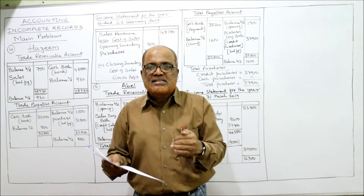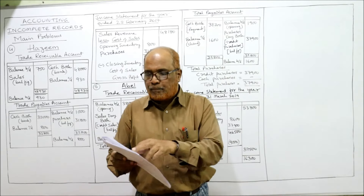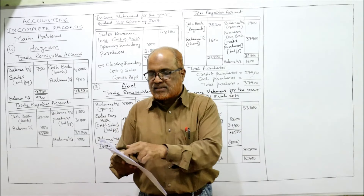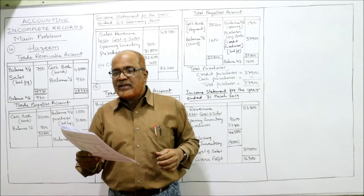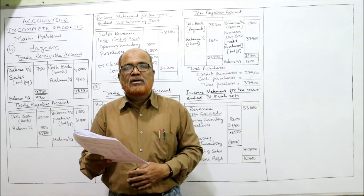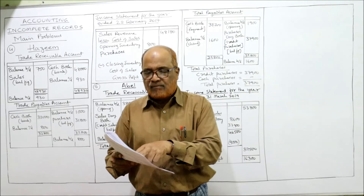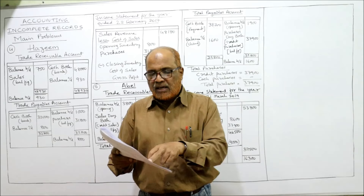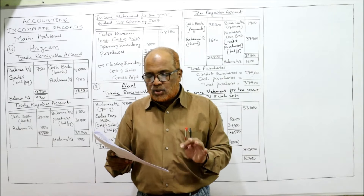Three key figures from the bank statement: cash received from receivables 48,000; cash paid to payables 32,000; cash paid for general expenses 7,000. Opening balances at 1st March 2016 and closing balances at 28th February 2017 are given — trade receivables opening 750, closing 930; trade payables opening 1,000, closing 800; inventory opening 800, closing 400.